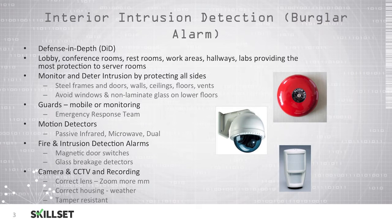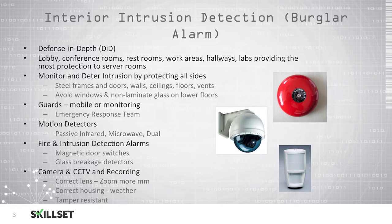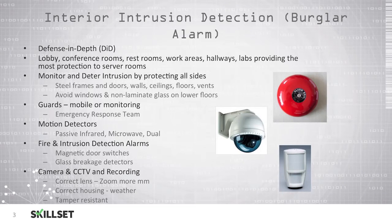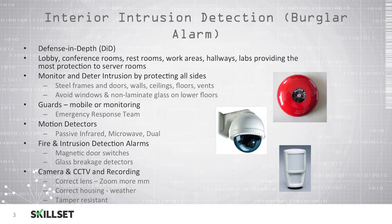As part of your strategy, you should provide additional protection for sensitive areas such as server rooms, but you may not need as much protection for conference rooms, work areas, and hallways. You can deter and respond to intrusion by monitoring all sides of the sensitive area that you are trying to protect. You should use steel frames on doors, walls, ceilings, floors, and vents, and you should attempt to avoid windows and non-laminate glass on lower floors because this can make it easy for an attacker to enter the building.